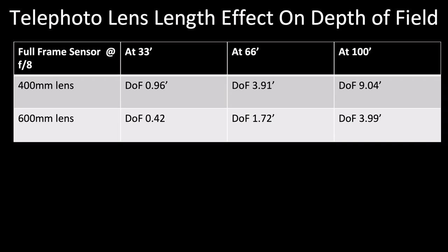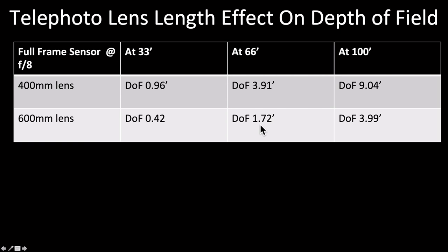This chart shows what telephoto length does. With a 400mm lens at 33 feet we have a foot of depth of field, but only half a foot with a 600mm lens. At 100 feet with 400mm we get nine feet of depth of field — enough to capture multiple birds sharply. With a 600mm lens at 100 feet you get less than half of that. Most of the time we photograph birds between 30 and 60 feet, so we're working with roughly half a foot to four feet of depth of field depending on the lens.